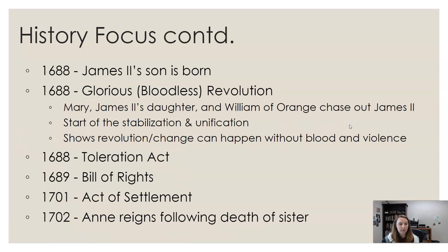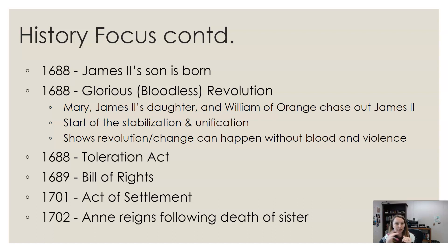So in 1688 we have the Glorious Revolution, also called the bloodless revolution. William of Orange, the husband of James II's daughter Mary, leads a relatively bloodless revolution that exiles James II and allows them to keep a Protestant ruler. Mary and her husband basically force her father out and take over. This is when everything stabilizes politically and the country is unified again. It also gives the idea that big changes and revolution don't have to be bloody or violent — which will be important if you continue on to Brit Lit II.